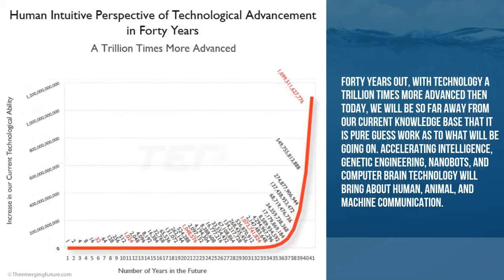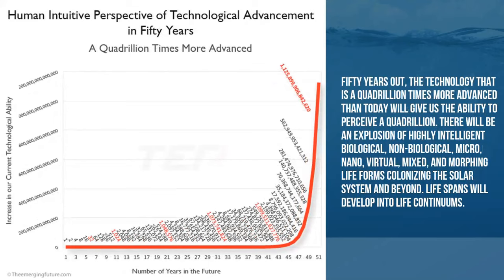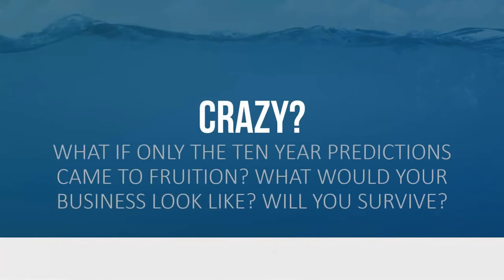At 40 years out, we're a trillion times more advanced, with nanobots and all types of interesting things. At 50 years out, technology is a quadrillion times more advanced — and we really don't have a good way to grasp what a quadrillion looks like. So I challenge you: what if only the 10-year predictions came to fruition? What would your business look like, and will your business survive?